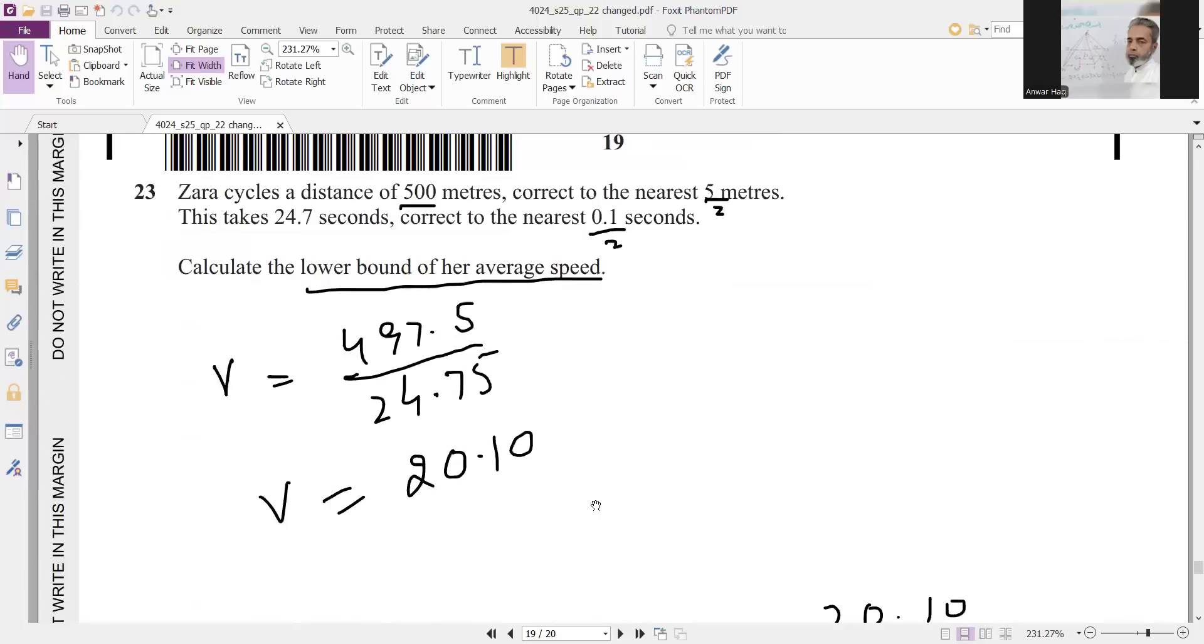Next is question 23. Zara cycles a distance of 500 meters correct to the nearest 5 meters. When you will divide 5 by 2, you will get 2.5. Adding 2.5 in this, you will get upper bound. Subtracting 2.5 from this, you will get lower bound. Similarly with this, 0.1 divided by 2 is 0.05. Adding in this will be upper bound, and subtracting from this will be lower bound. He is asking for lower bound of the average speed. For the lower boundary, you have to take the lower bound of the distance divided by upper bound of the time. So you will get 20.1 average speed.